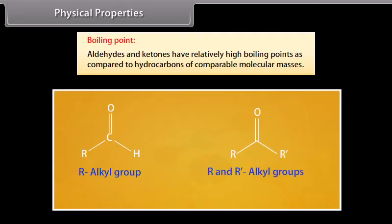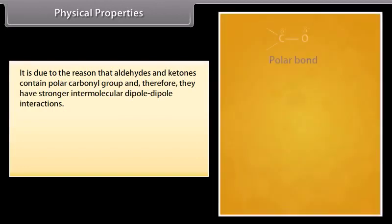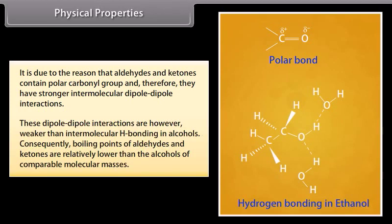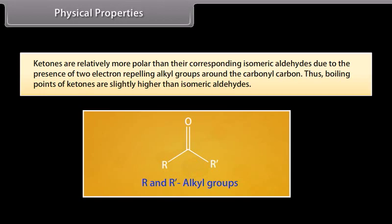Boiling point. Aldehydes and ketones have relatively high boiling points compared to hydrocarbons of comparable molecular masses because they contain a polar carbonyl group and therefore have stronger intermolecular dipole-dipole interactions. These dipole-dipole interactions are, however, weaker than the intermolecular hydrogen bonding in alcohols; consequently, boiling points of aldehydes and ketones are lower than those of alcohols of comparable molecular masses. Ketones are relatively more polar than their corresponding isomeric aldehydes due to two electron-repelling alkyl groups around the carbonyl carbon, so boiling points of ketones are slightly higher than those of isomeric aldehydes.